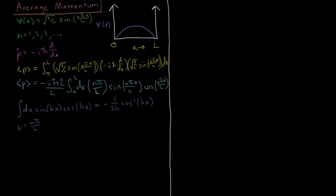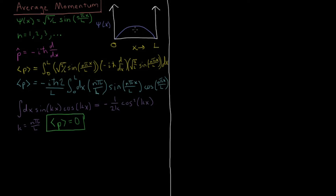Once we fully solve that integral out, the expectation value of momentum equals zero. So on average, the particle isn't moving forward or backward — it's just staying put. Or equivalently, it's equally likely that the particle is moving to the right or to the left.